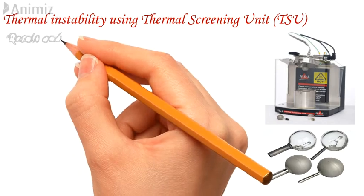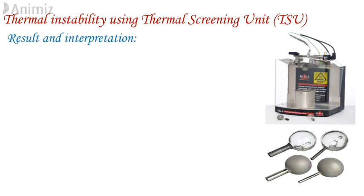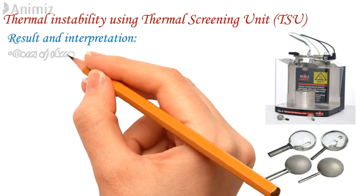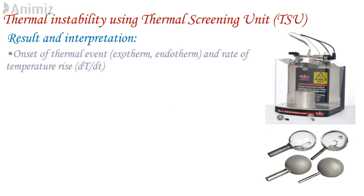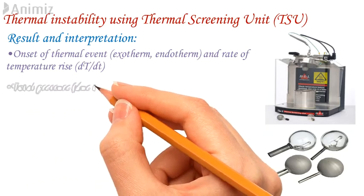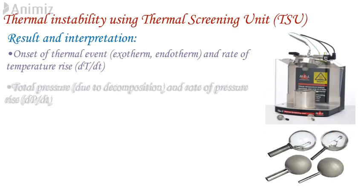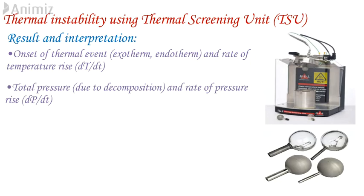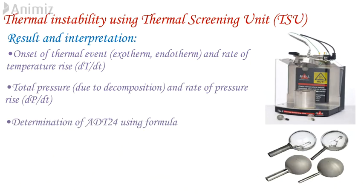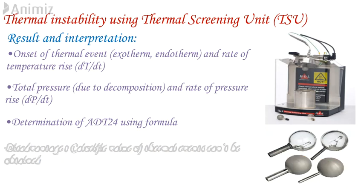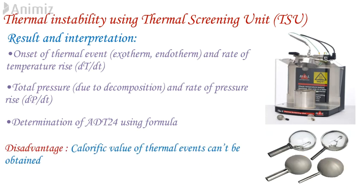Results and interpretation from TSU: 1) Onset of thermal event — i.e., exotherm or endotherm — and rate of temperature rise dT/dt. 2) Total pressure due to decomposition and rate of pressure rise dP/dt. 3) Determination of ADT24 using a formula. One disadvantage of TSU is that the calorific value of a thermal event cannot be obtained, unlike with DSC.